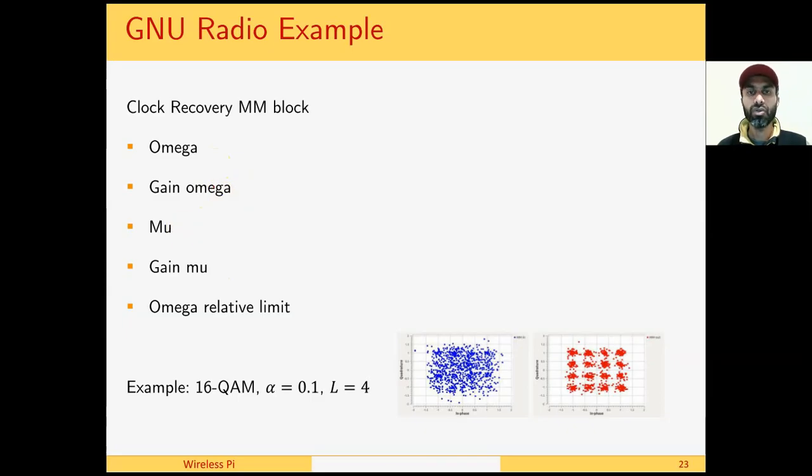Gain mu is the proportional Kp constant of the loop filter, and we have discussed in lecture 4 on PLLs how to set this as well. Omega relative limit is the maximum deviation this can deviate from the actual value of omega when the sampling clock offset is present.